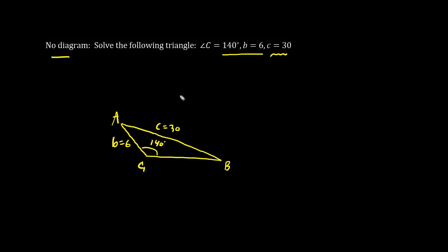So we wrote down the givens, and we need to solve. Now to solve, we can play catch. We have side length b is 6, so let's figure out angle B. We have the angle, and we can play catch across for the C's. So we have the sine law: sine 140 over 30, equals sine B over 6.